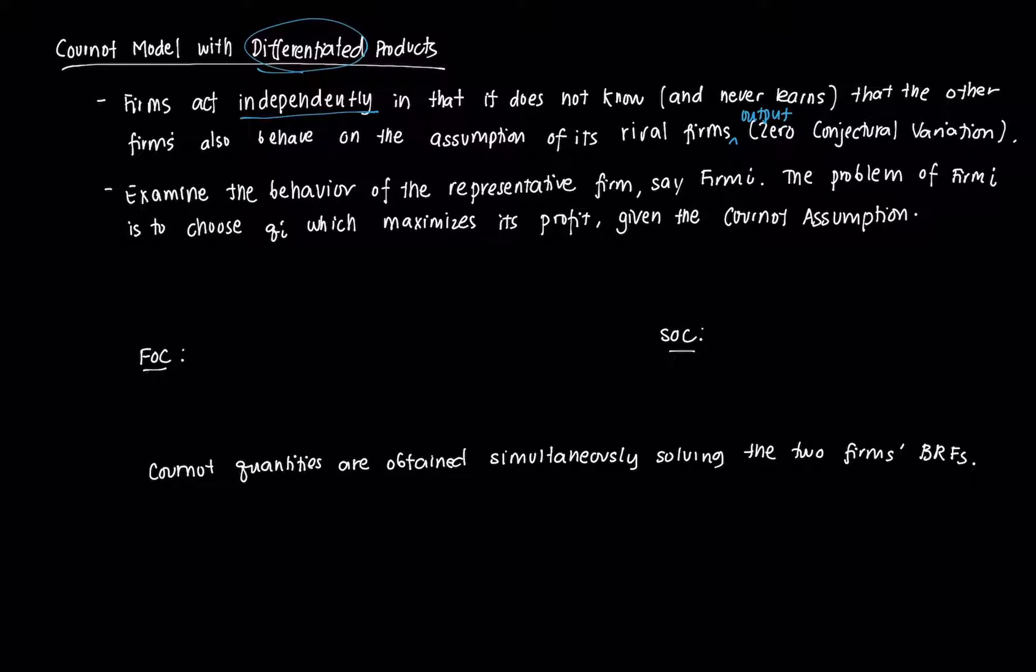If we examine the behavior of a representative firm, say firm i, then the problem of that firm is to choose a level of quantity that can maximize its profit given the Cournot assumption. The goal is to maximize profit πi, which is some level of Qi, noting the zero conjectural variation dQj/dQi equals zero, where i is not equal to j.